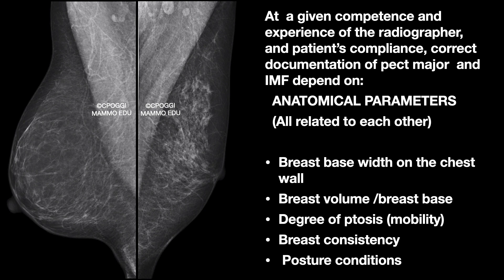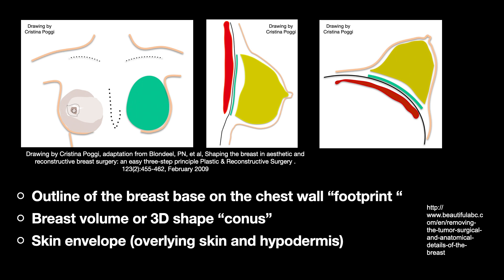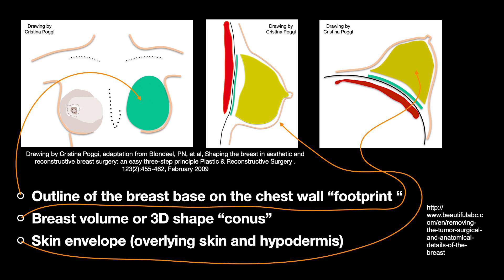Pectoralis major and IMF documentation depends — at a given competence and experience of the radiographer — on many interrelated factors: breast base width on the chest wall, breast volume, breast base ratio, degree of ptosis, which indicates how easy it is to peel the breast away from the thorax, breast consistency — how much the breast is manipulatable — and the posture conditions too. Represented here are the footprint in green, the volume of corpus in yellow, and the skin envelope in pink. From an idea by Dr. Philip Blondeel, an international leading expert on aesthetic breast surgery, I reckon all three parameters have a deep impact on the quality of images we radiographers can produce.